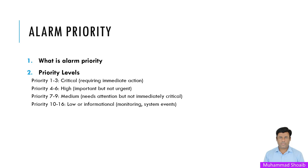Typically the scheme is: priority 1 to 3 is critical and requires immediate action or attention; priority 4 to 6 is high priority and important but not urgent; priority 7 to 9 is medium, needing attention but not immediately critical; and priority 10 to 16 is lower — informational, just for monitoring. For example, if our client wants only critical signals to appear on the alarm control screen, we can filter alarms with priority 1 to 3. We will see practically how this works.